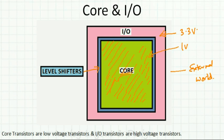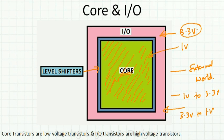A level shifter (shown in blue) converts outgoing core signals from 1V up to 3.3V, and incoming signals from 3.3V down to 1V. This way we get the best of both worlds: 3.3V for noise immunity at the IO and 1V for power saving at the core. That's why core transistors are always low-voltage transistors and IO transistors are always high-voltage transistors.